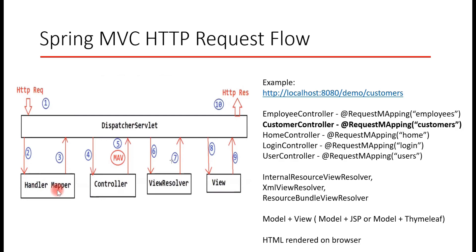So basically the DispatcherServlet will ask the HandlerMapper to identify which controller is responsible to handle this request — this is the second step. The HandlerMapper identifies which controller is responsible to process this particular request. For example, for the '/customers' URL, it will go to the CustomerController and look for the method annotated with the @RequestMapping annotation with that URL. Once the HandlerMapper maps the request, it returns the controller details back to the DispatcherServlet.